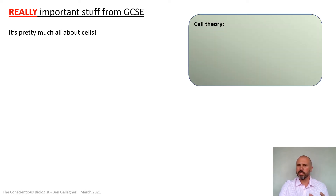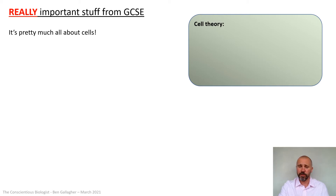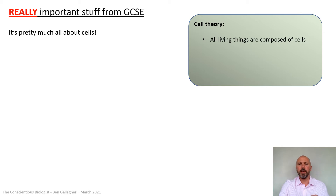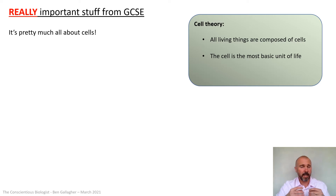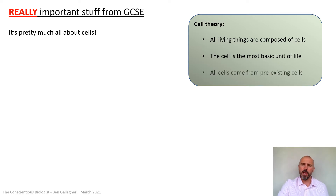Let's look first at cell theory. You may have talked about this at GCSE but probably didn't specifically revise it. It's a basis for lots of biology. First: all living things are composed of cells — there's nothing living that isn't made of cells. Second: the cell is the most basic unit of life. Third: once you split a cell open and start looking at the things inside it, they can no longer be classed as living.